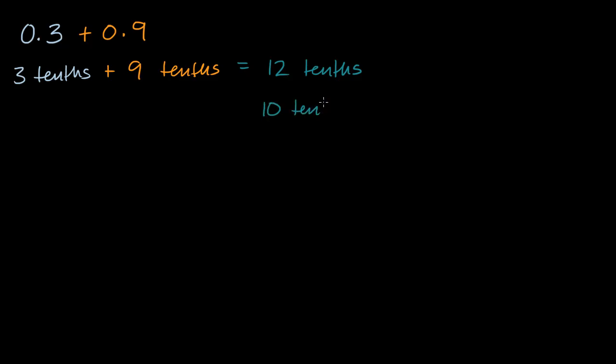Well one way to think about it, this is 10 tenths, 10 tenths, plus 2 tenths. And what are 10 tenths? Well if I have 10 tenths, this right over here is one whole. So that is going to be one. So we have one and 2 tenths. So how do we write one and 2 tenths? Well we could write it as, in the ones place we just write a one. And then in the tenths place we write our 2 tenths. So you could say it's equal to 1.2. Or you could say it's equal to one and 2 tenths. Which is the same thing as 12 tenths.